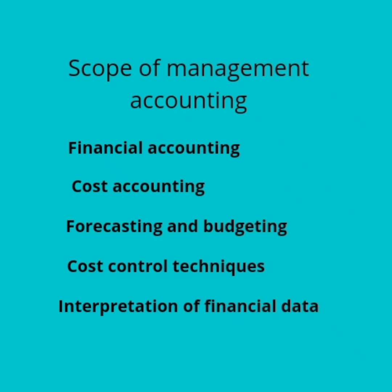The next area is forecasting and budgeting. For forecasting future events, we need to predict what will happen. For forecasting, we prepare budgets. For future events, we prepare budgets and set plans, policies, and goals. For budgeting, we need to control budgetary standards.